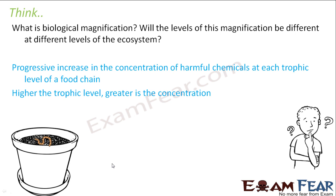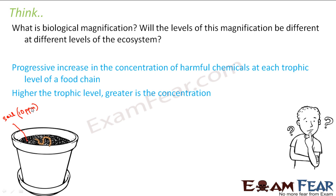Let us look at an example. Here we can see there is an earthworm in the soil. Now let us take the example of a chemical called DDT. It is generally put to improve the quality of soil. Let us suppose that the concentration of DDT in the soil is 10 particles per million — that means for 1 million particles of soil, there is one particle of DDT. Now this earthworm feeds on the soil.